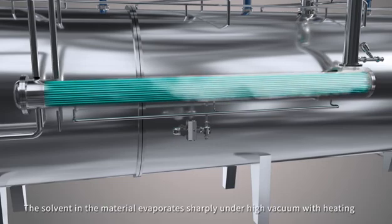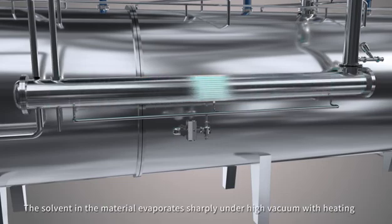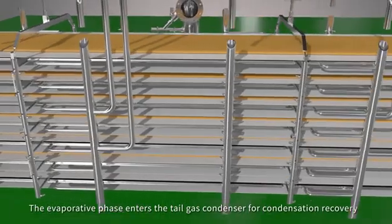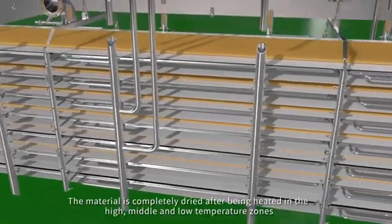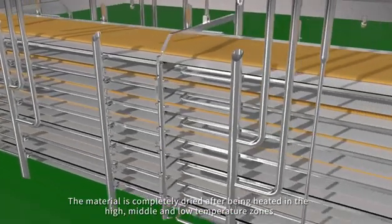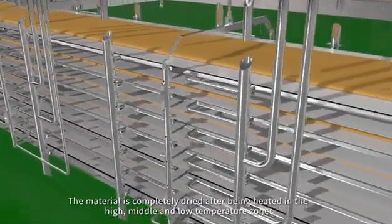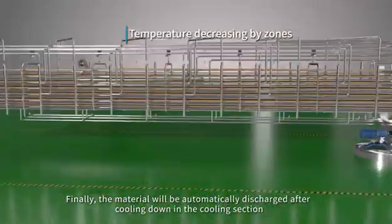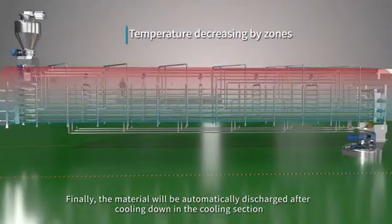The solvent in the material evaporates rapidly under high vacuum with heating. The evaporated phase enters the tail gas condenser for condensation recovery. The material is completely dried after being heated in the high, middle, and low temperature zones. Finally, the material will be automatically discharged after cooling down in the cooling section.